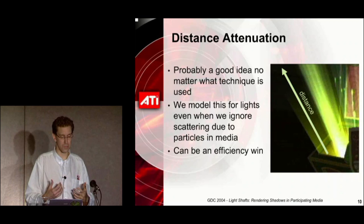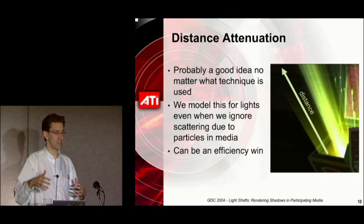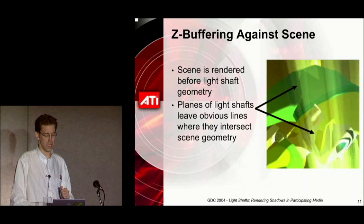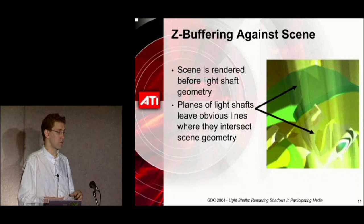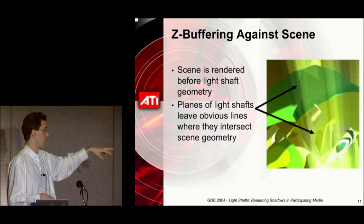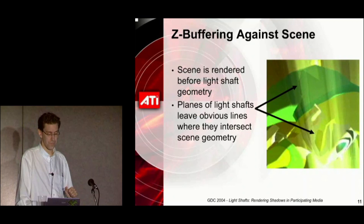It's also an efficiency win — the quicker you attenuate out, the less of your world you have to light with a particular light. An artifact you see with this approach is that because those light shaft extruded polys are Z-buffered against the scene, you can see the funny contours along the side of Link's head — a natural side effect of the way they implemented this.